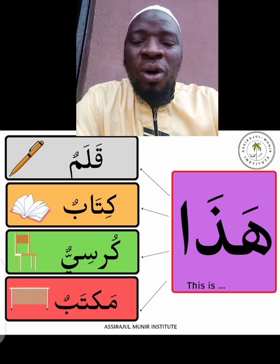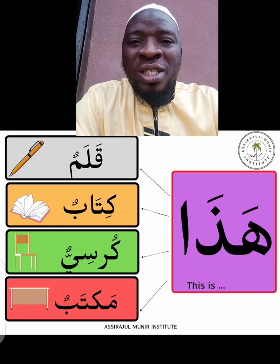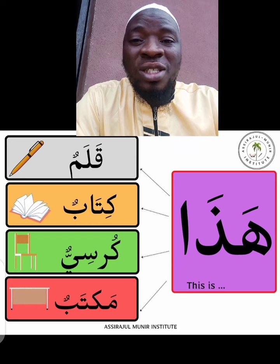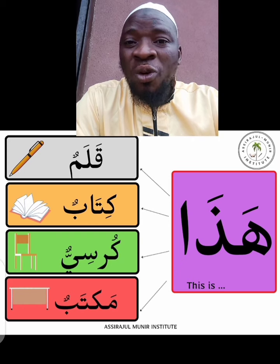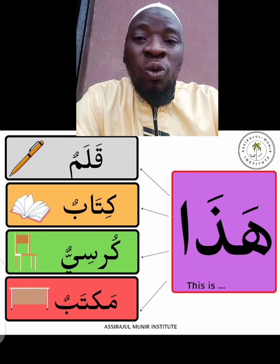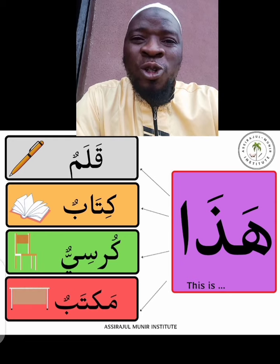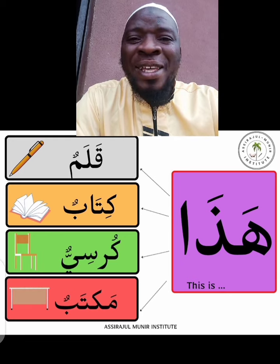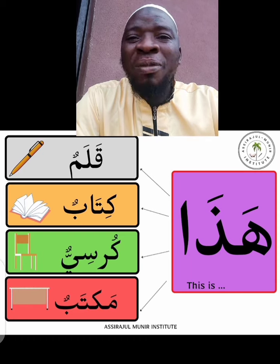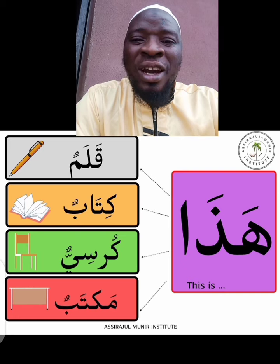From this word you can change hadha with hadhi. When you use hadhi, it means it is feminine. For instance, you say imura'atun instead of kolam — hadhi imura'atun means 'this is a woman.' You can also replace hadha with other words: hadha siroj, this is Siroj; hadha Abdullah, this is Abdullah; hadha baytun, this is a house.